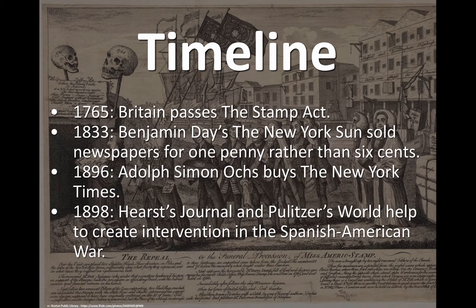In 1896, Adolf Ochs buys the New York Times, which continues today. In 1898, William Randolph Hearst's The Journal and Joseph Pulitzer's The New York World helped to create intervention in the Spanish-American War. This was the period of so-called yellow journalism, named after a comic strip, The Yellow Kid. We tend to think of yellow journalism as a very negative connotation today — sensationalistic and bombastic — but there was also some great journalism during that time. We'll read two authors, Richard Harding Davis and Stephen Crane, who were great journalists no matter what time they would have written in.